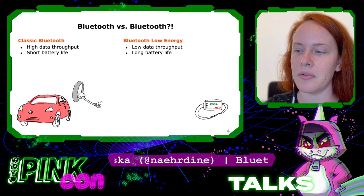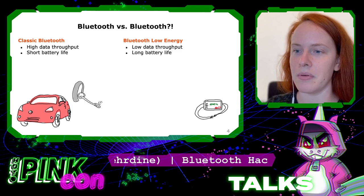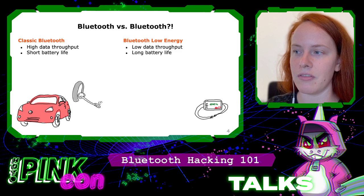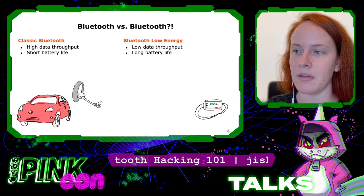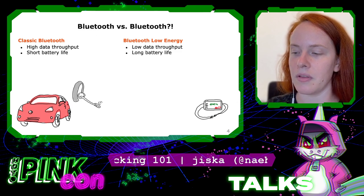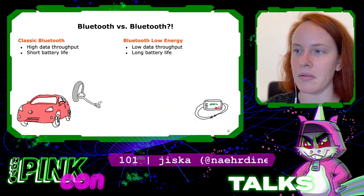There are actually two types of Bluetooth, and you might not have heard about this before: there is classic Bluetooth and there's Bluetooth Low Energy. Classic Bluetooth is what you know as, for example, your headset or your car — it typically has high data throughput but a short battery life. Bluetooth Low Energy is what you would see in an IoT device; it has low data throughput but a long battery life — for example, with a button cell you could survive a full year just beaconing some data around.